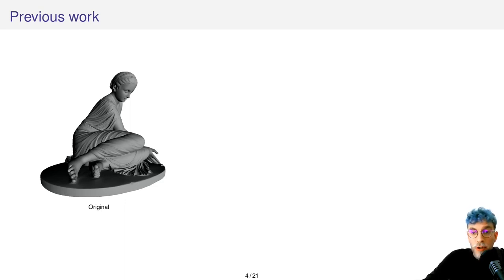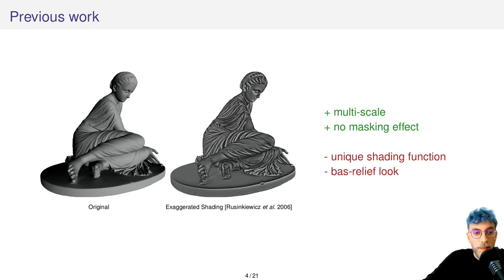Today I will focus on the three closest methods to ours, and it begins with exaggerated shading. It was proposed in 2006 by Rusinkiewicz and colleagues and allows enhancement of objects at multiple scales. It relies on a custom shading function that solves masking effects.